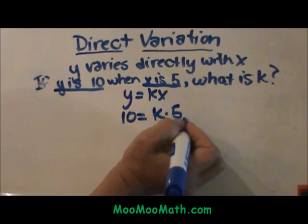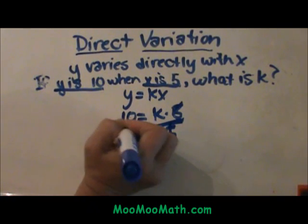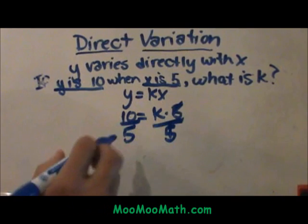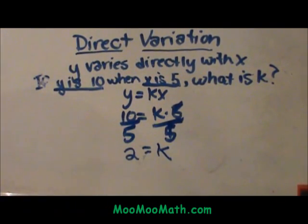To solve for k, notice the rules. I will divide both sides by 5 and I get 2 is equal to k. So that is my first step. I actually have to solve for k.